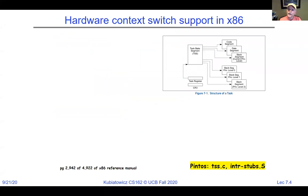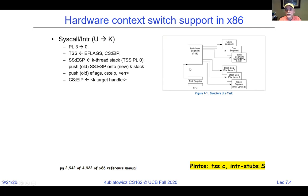The x86, which is what you'll run Pintos on, has the Task State Segment (TSS) format. Operating systems like Pintos and Linux only use one TSS at any given time, even though the x86 was designed so every task or thread would have its own TSS. What's important in the TSS is that it contains stacks for privilege levels 0, 1, and 2. The x86 has four privilege levels, but we only use level 0 for the kernel and level 3 for the user.